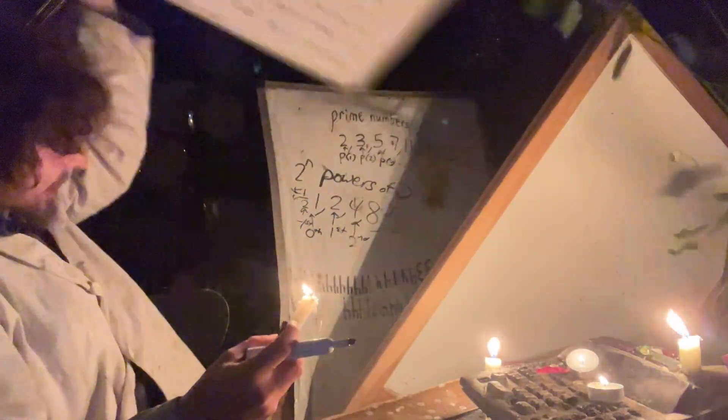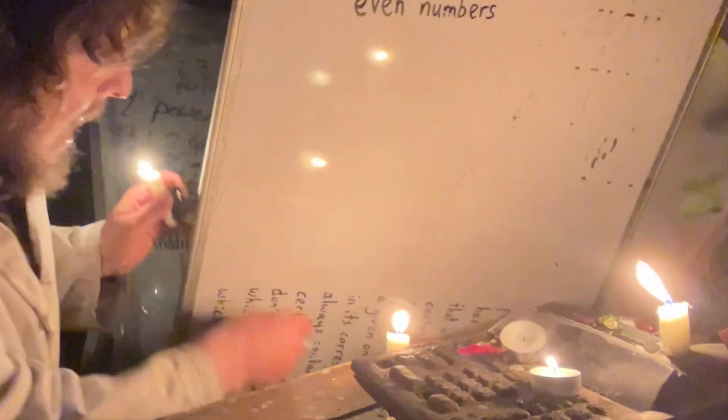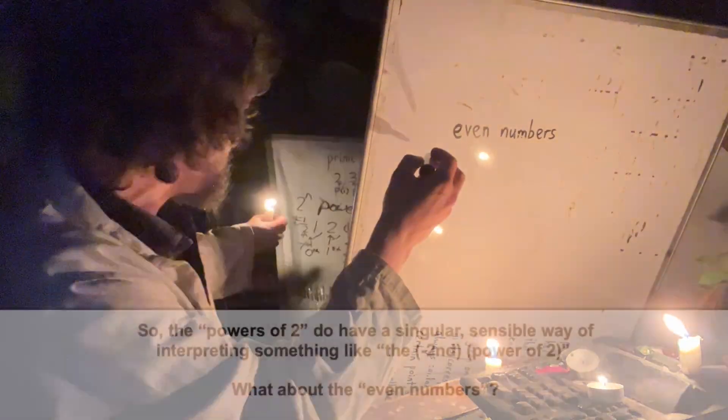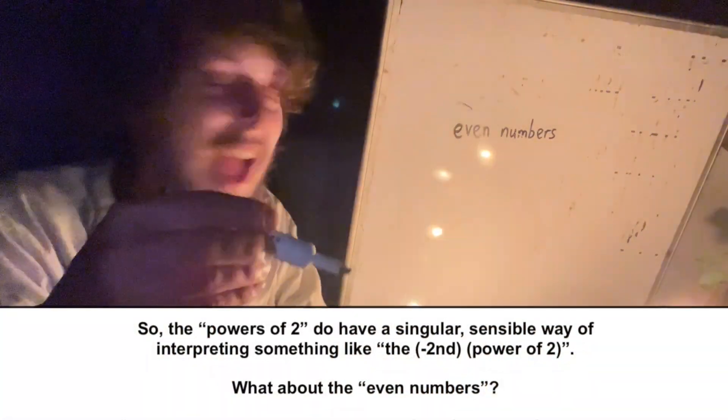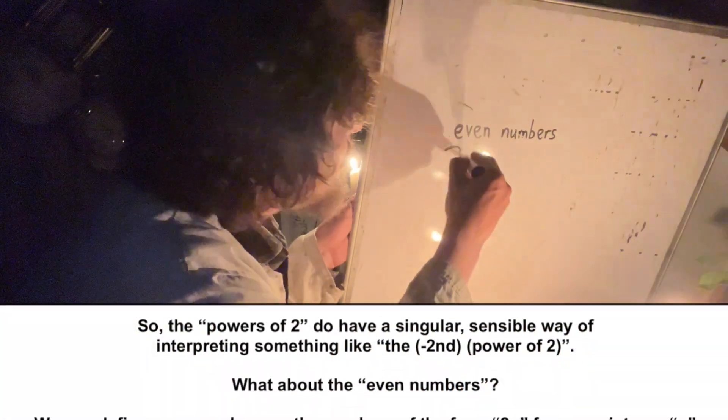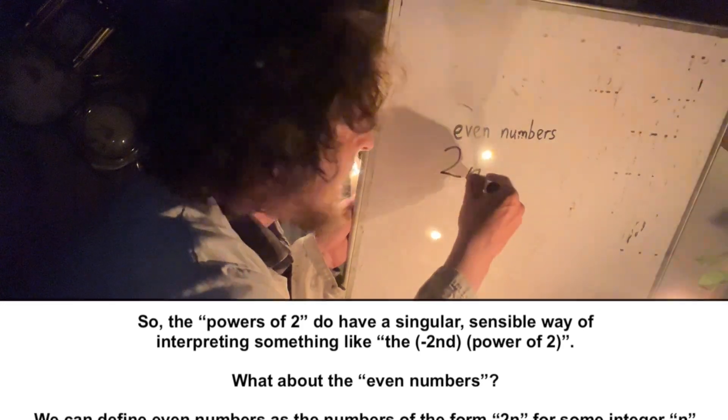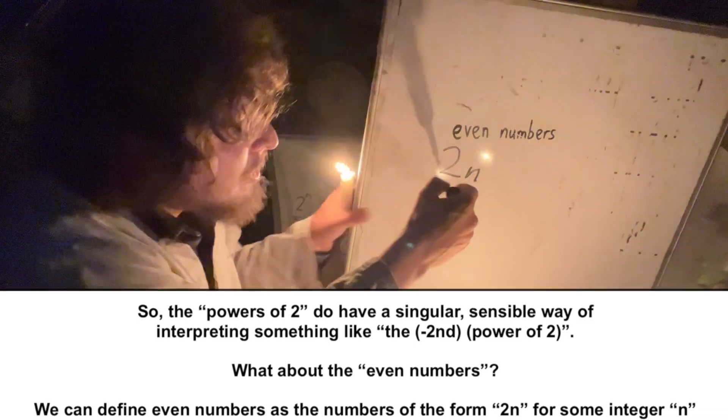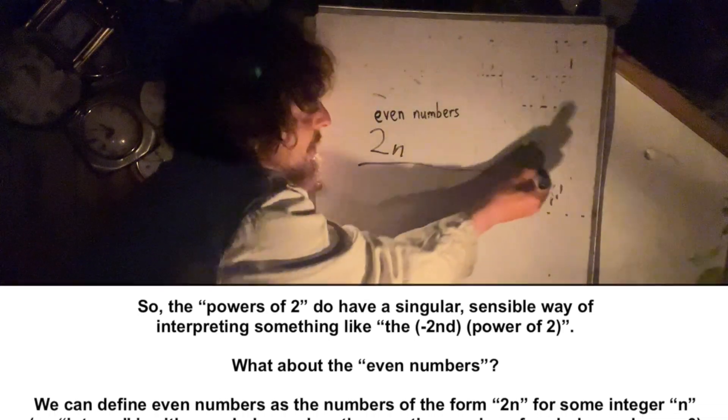And somewhat similarly, if you look at the even numbers, ignore that, similar as before. Even numbers, kind of like the powers of two, where two to the power of n are two times n for some n. So, normally, you look at a number line and just say, okay, well,